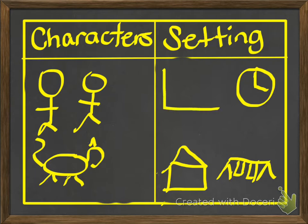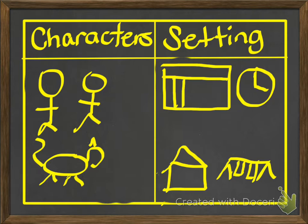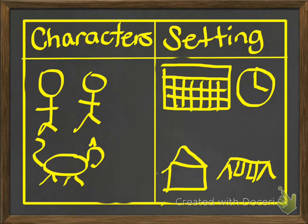I'm gonna draw a little calendar here. The calendar is to help you remember that it could be the time of year, like a season. It could be winter, could be fall, could be summer, could be spring. So the setting is not only where the story takes place, but what time the story takes place — what time of day or what time of the year.